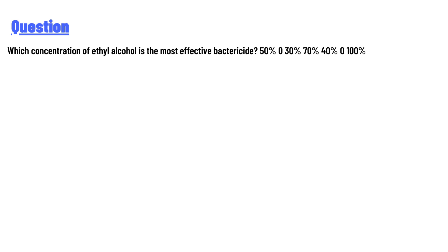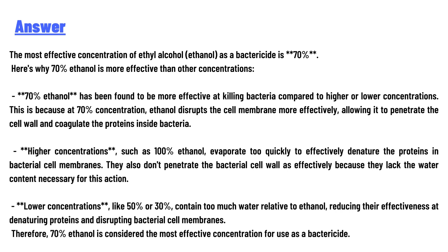50%, 30%, 70%, 40%, or 100%? The answer to the question is: the most effective concentration of ethyl alcohol as a bactericide is 70%. 70% ethanol is more effective than other concentrations.